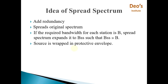The idea of Spread Spectrum is that Spread Spectrum techniques add redundancy. The original spectrum needed for each station is spread. If the required bandwidth for each station is B, then Spread Spectrum expands it to BSS such that BSS is very, very greater than B. The source is wrapped in a protective envelope — this increased bandwidth allows us to add extra bits, which we call the envelope.